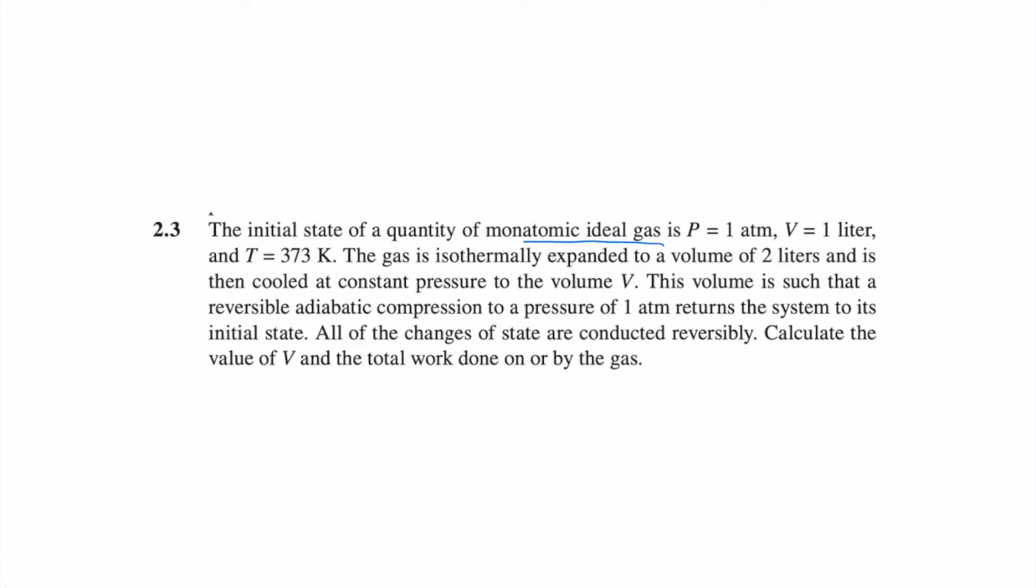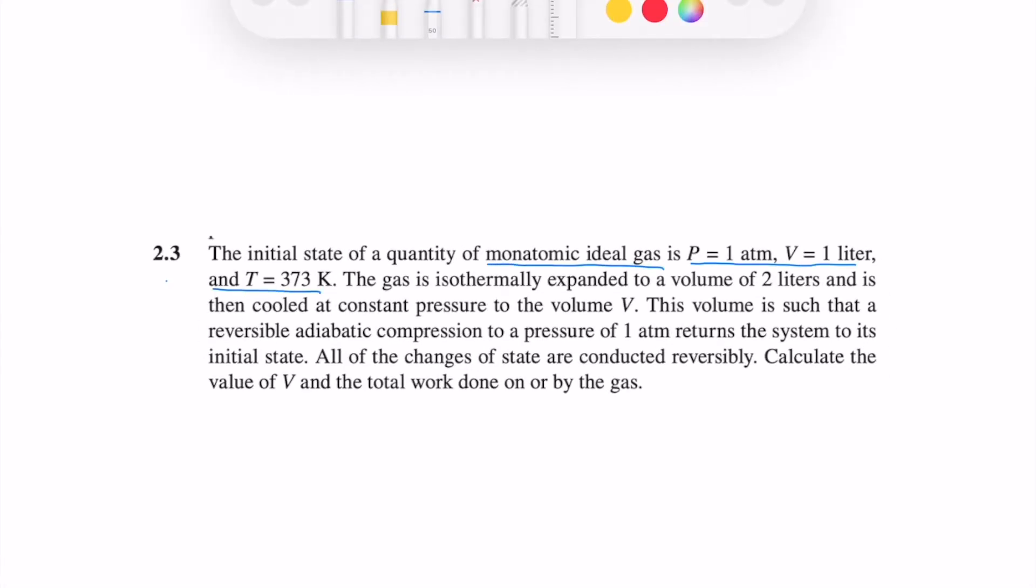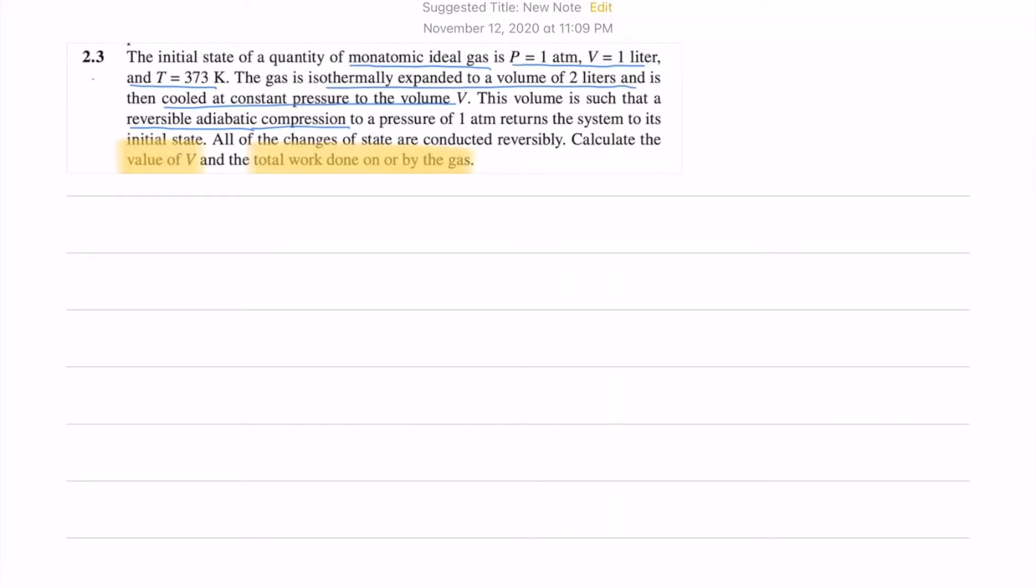Hi guys! Today I want to discuss gas scale 2.3 equation. In this problem, a monoatomic ideal gas has been taken through three processes and we have to calculate volume V and total work done.